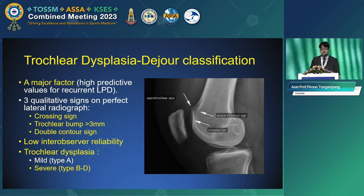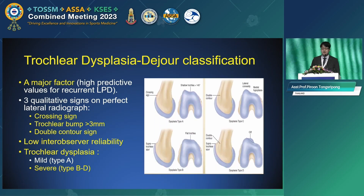Trochlear dysplasia is a major factor with high predictive value for recurrent patella dislocation. The Déjour classification describes three qualitative signs on a perfect lateral radiograph: the crossing sign, trochlear prominence, and double contour sign, though it has low inter-observer reliability. Trochlear dysplasia is divided into two groups: mild type A, and severe types B through D.